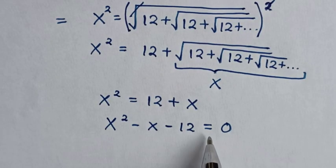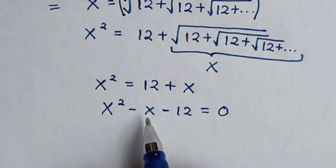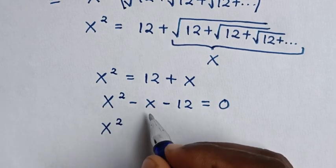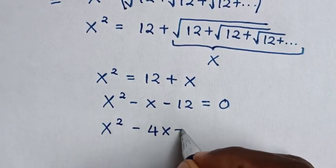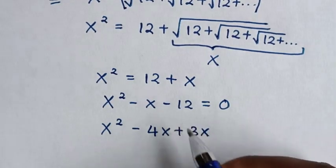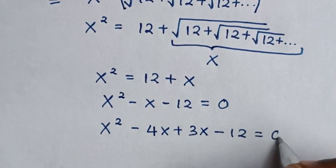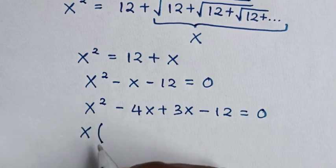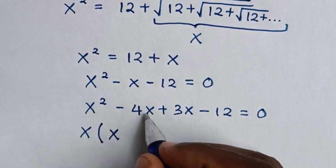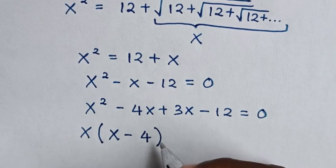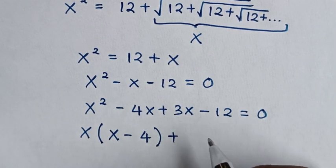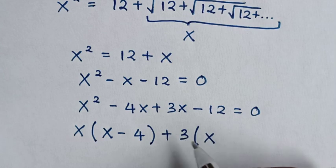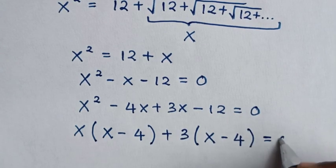We will solve this quadratic equation by factorization, where the sum is negative x and the product is negative 12. So it will be x squared, and negative x is the same as negative 4x plus 3x, minus 12 equals 0. In here x is common, so we take x out of the bracket: x squared divided by x is x, negative 4x divided by x is negative 4. Then plus: we take 3 out of the bracket — 3x divided by 3 is x, negative 12 divided by 3 is negative 4. So the bracket equals 0.